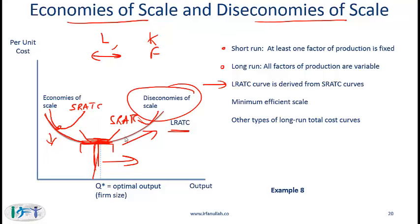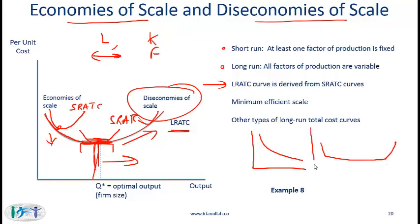What I have shown here is one type of long run average total cost curve which is U-shaped. As the curriculum describes, we might also have a downward sloping curve, or other shapes for the long run average total cost curve. Now I want you to read example 8, which illustrates these points.